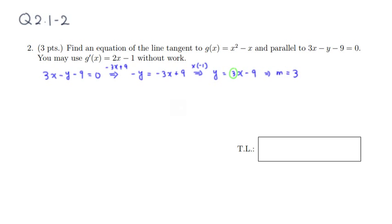Another way to get the slope would be we can just take the derivative of the function and then plug in the x1 value. The derivative is already given, so that's going to be 2x1 minus 1. And this is equal to the slope is 3.